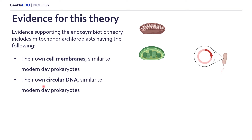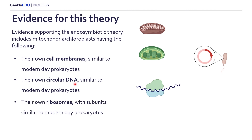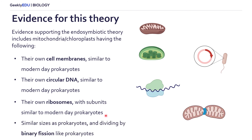These organelles also have their own circular DNA, similar to prokaryotic cells that exist today. They also have their own ribosomes, whose subunits are pretty similar to those in prokaryotic cells, and they have similar sizes to some prokaryotic cells of today. Additionally, mitochondria and chloroplasts have been shown to divide by binary fission, which is the way that prokaryotic cells divide.